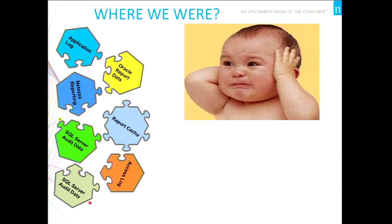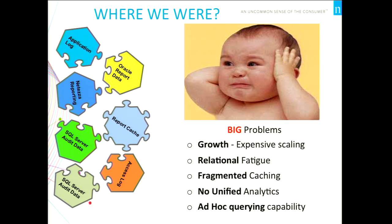About three or four years back, we went through massive growth with many different teams building different components on our huge platform. We were stuck in the vertical scaling paradigm and experiencing relation fatigue — having to re-architect the application every time we had a different schema. Each component had implemented its own caching layer — some using EHCache, some using Memcache — with nothing unified across the platform.